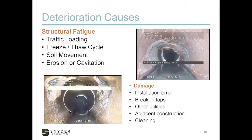Traffic loadings, especially for shallow pipes, the natural freeze-thaw cycle, soil movements, and erosion or cavitation of the flow in the pipe can cause movements. Anytime something moves — especially with old clay pipes that don't like to move — they can result in cracks that eventually turn into collapsed sewers. Damages from installation errors can harm pipe integrity. Break-in taps can damage pipe, as can other utilities. The picture on the left shows a gas line that was bored right through the top of a sewer pipe. Adjacent construction and even cleaning can cause damage over time.